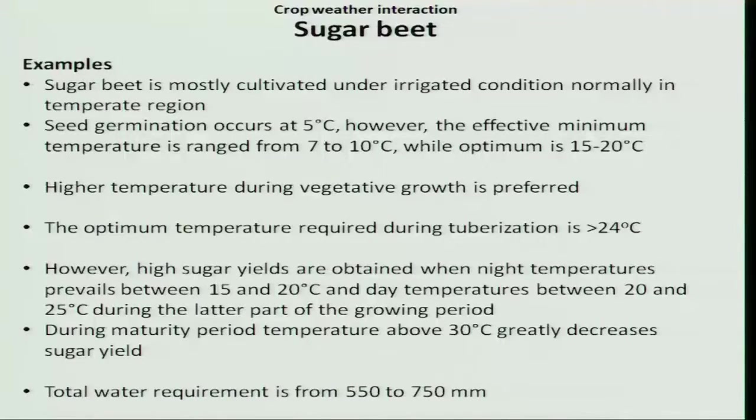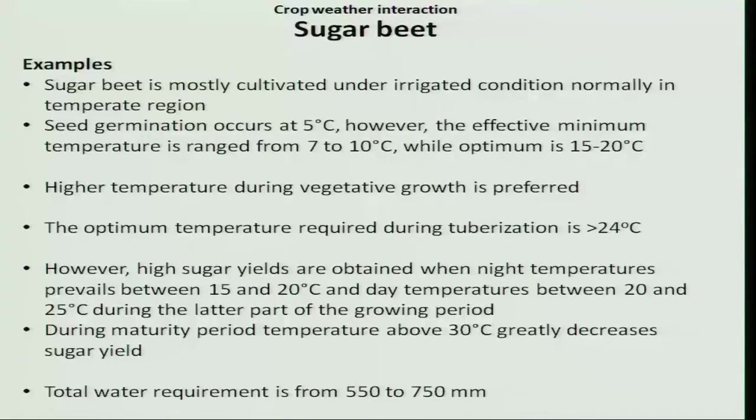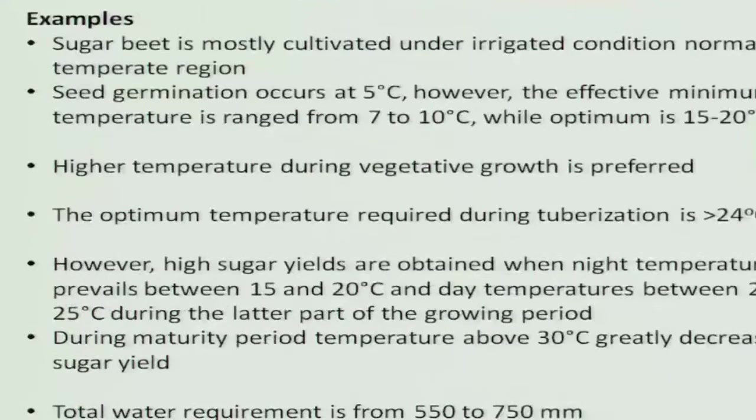The maximum tuber size was reported with an optimum temperature of about 24 degree Celsius. During the transition from vegetative to the tuberization stage, it requires an optimum soil moisture level. Light irrigation is advised at periodical intervals to get the maximum tuber size, because tubers are grown under the soil. Therefore, optimum moisture has to be maintained to increase the maximum tuber size.